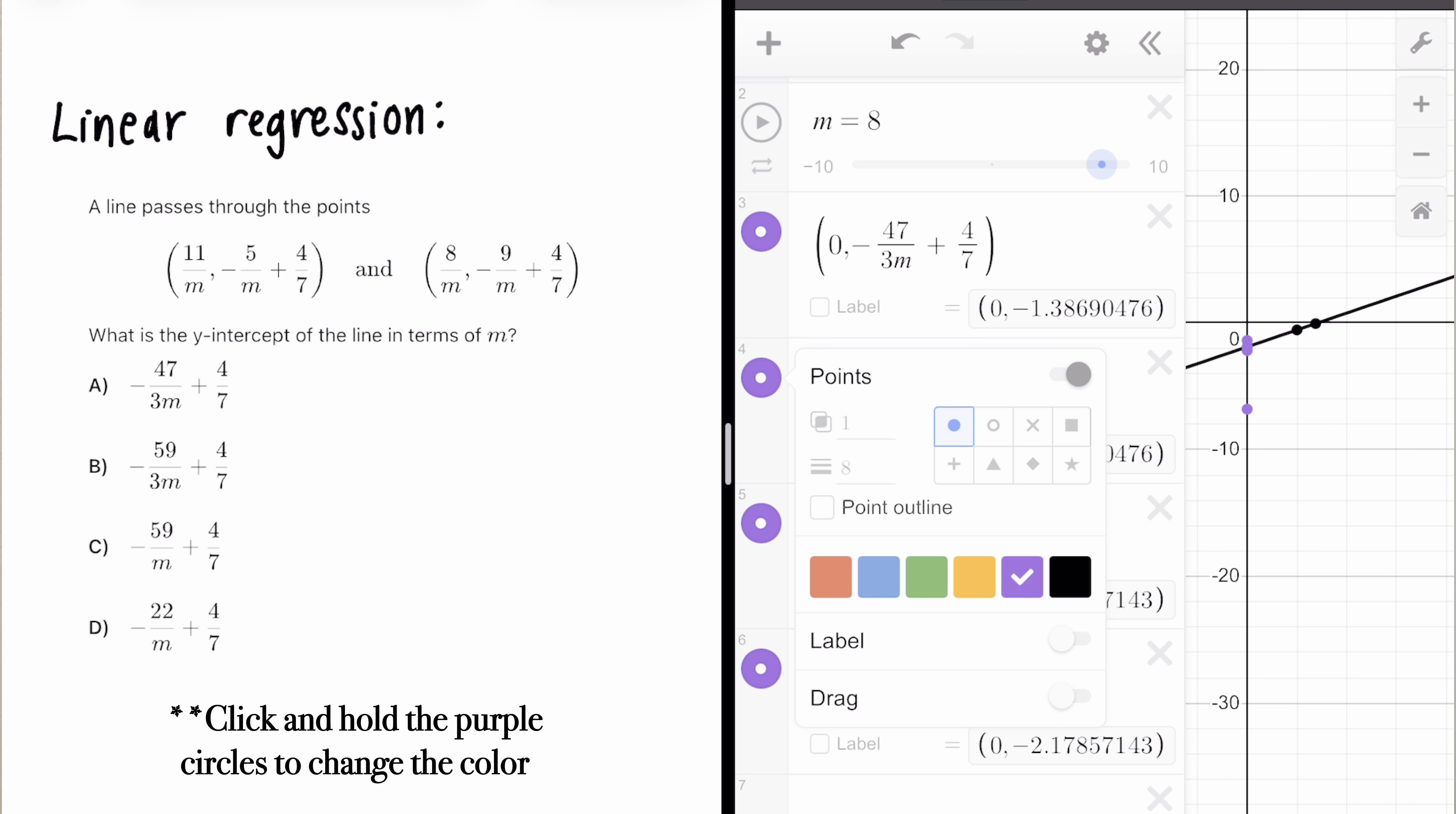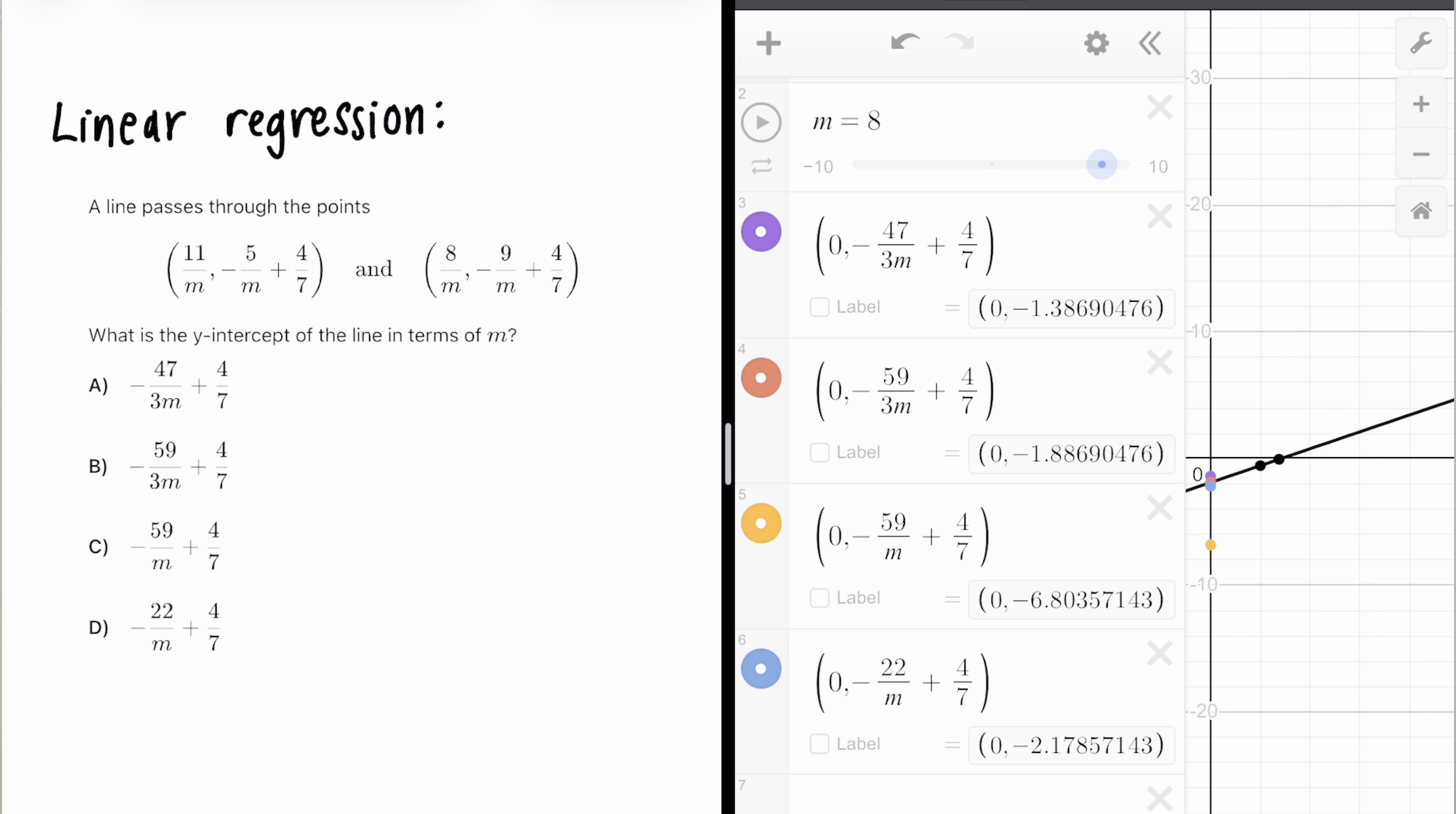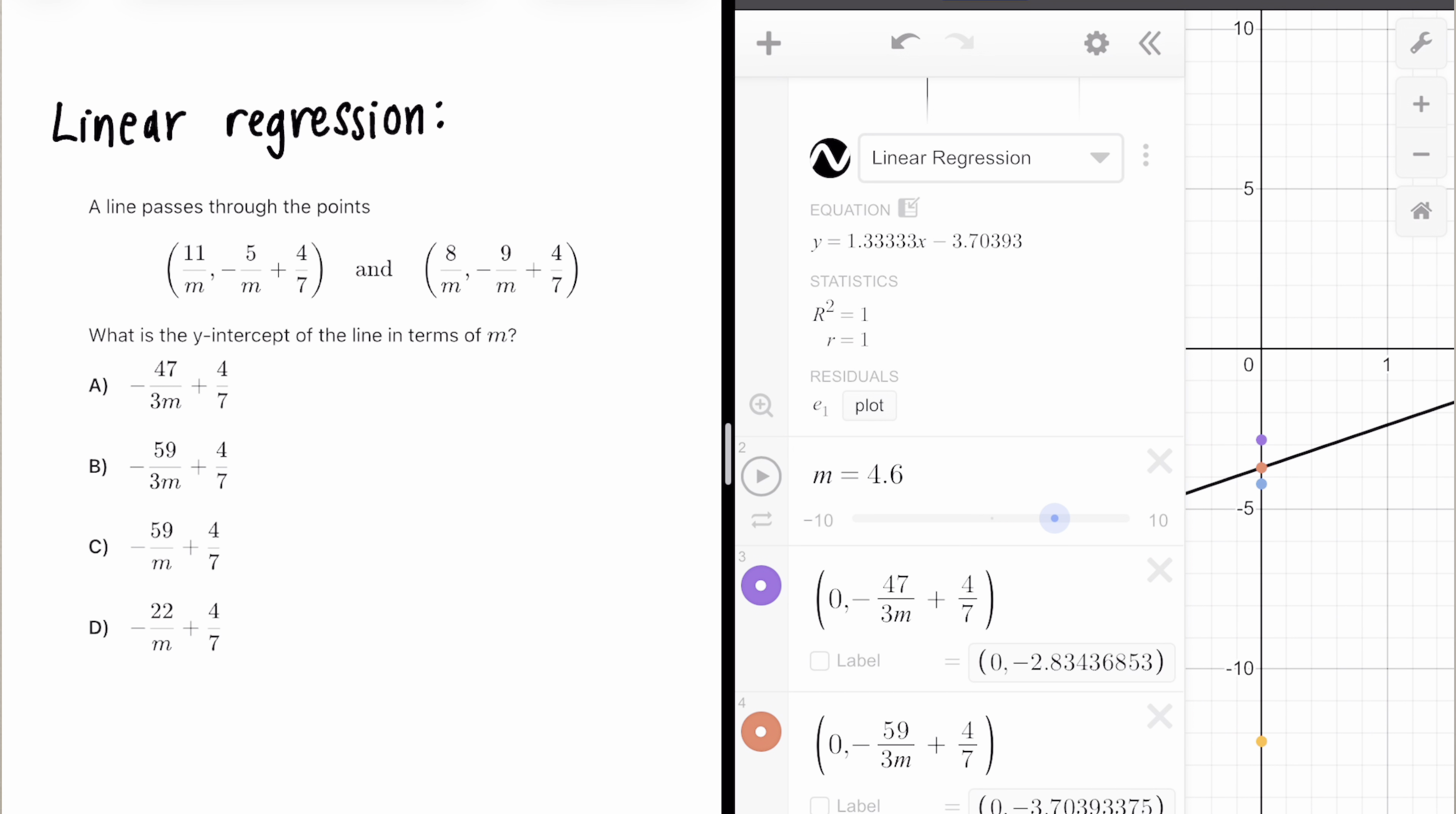The problem is that they're all the same color because we duplicated the color. Now they're all different. And what you can see is that for every single value, every single value of m, the red dot is the only one that sits on the y-intercept at every single value of m.